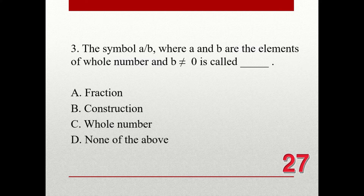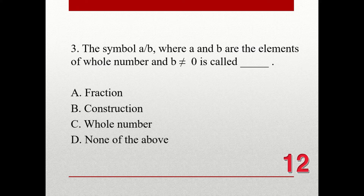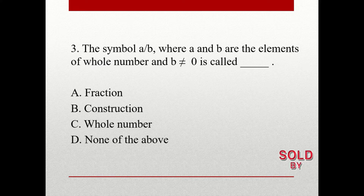Question number three. The symbol A over B, where A and B are elements of whole number and B is not equal to zero, is called: A. Fraction. B. Construction. C. Whole number. D. None of the above. The right answer is A. Fraction.